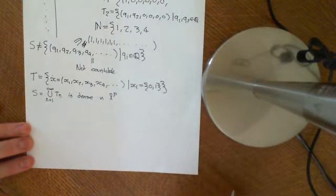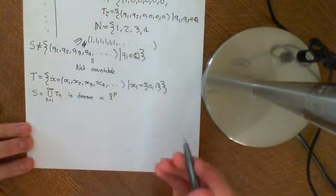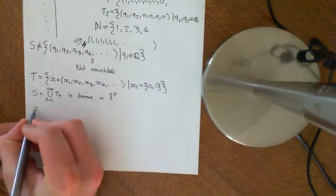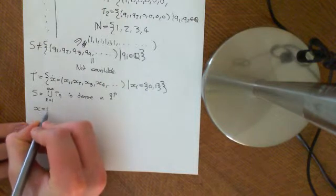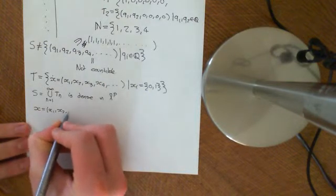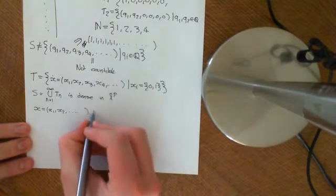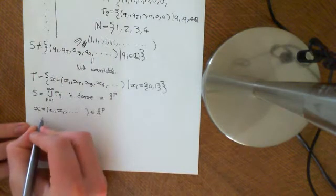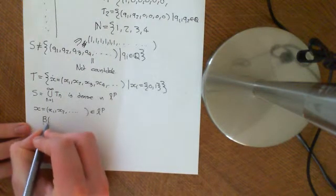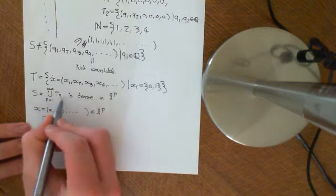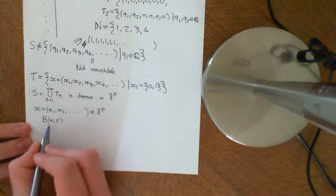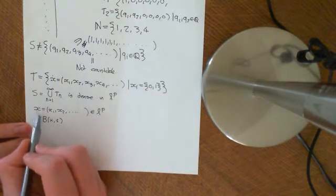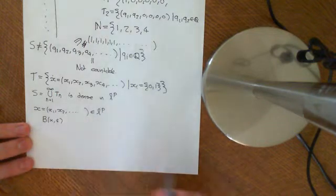The way we're going to do that: to show that S is dense, we have to show that for any sequence X = (X1, X2, ...) which is an element of LP, inside the ball centred at X of radius epsilon, there is a point of S. Whatever epsilon you give me, I can find you a point in S which is a distance from X less than epsilon.